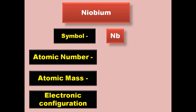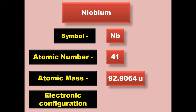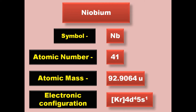Niobium has symbol Nb, atomic number 41, atomic mass 92.9064, electronic configuration [Kr] 4d4 5s1. Niobium is a transition metal and exists in solid form at room temperature.